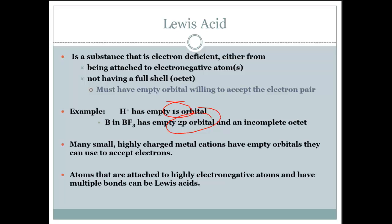Many small, highly charged metal cations have empty orbitals they can use to accept electrons. Atoms that are attached to highly electronegative atoms and have multiple bonds can be Lewis acids.